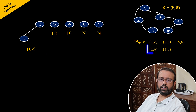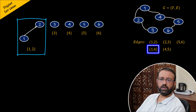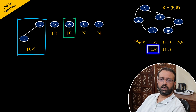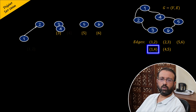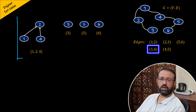Then we have an edge between vertex one and vertex four. Vertex one belongs to the set which contains one and two, and vertex four belongs to set four, so they are in different sets. Therefore, we will perform union of the set containing one and two, and set four. After the union operation, vertices one, two, and four will be in the same set.